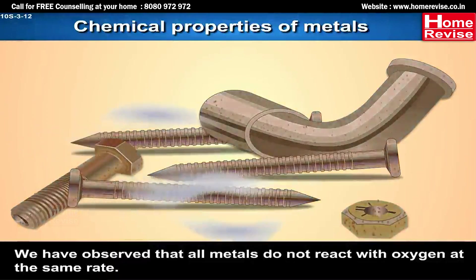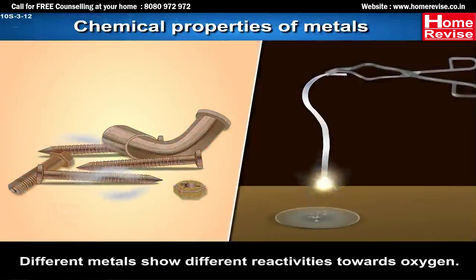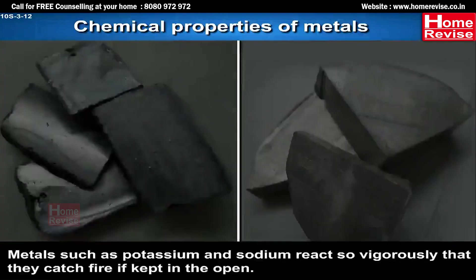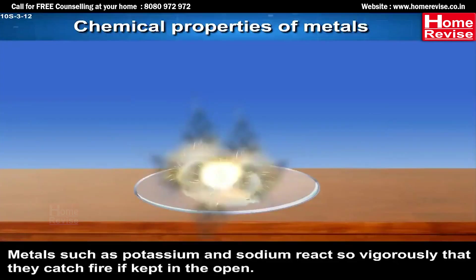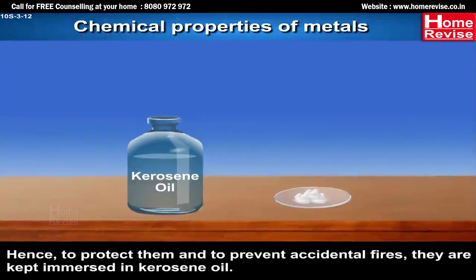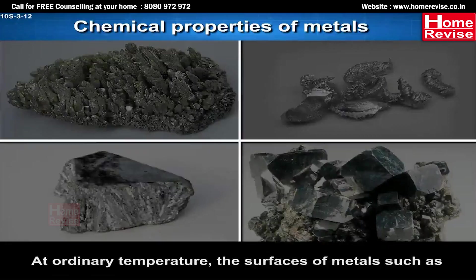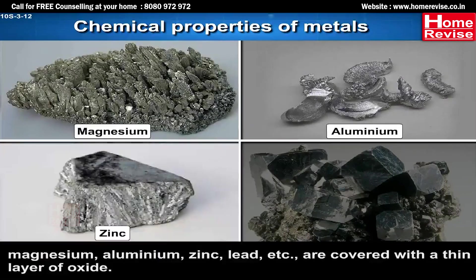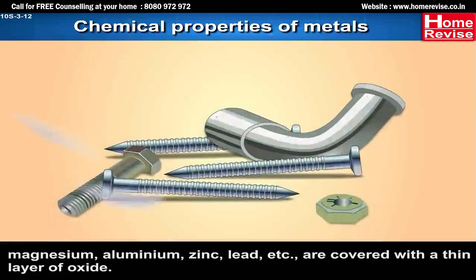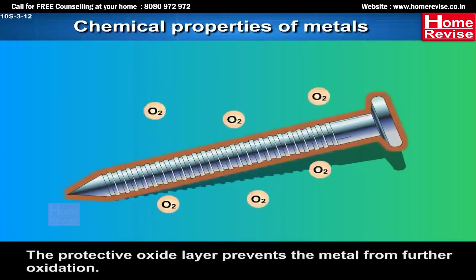All metals do not react with oxygen at the same rate — different metals show different reactivities towards oxygen. Metals such as potassium and sodium react so vigorously that they catch fire if kept in the open; hence they are kept immersed in kerosene oil. At ordinary temperatures, the surfaces of metals such as magnesium, aluminium, zinc, and lead are covered with a thin layer of oxide, and this protective oxide layer prevents the metal from further oxidation.